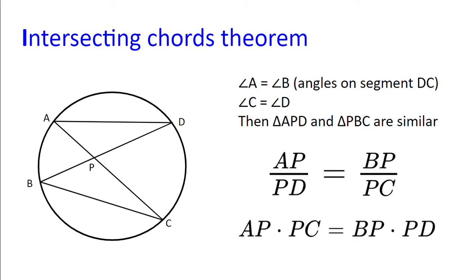Similarly, we find angle C is angle D. Then we have two triangles, APD and PBC, with all their angles being the same. We have angle APD being BPD, angle PAD being PBC, and angle ADP being PCB. So then we have AP divided by PD equals BP divided by PC.